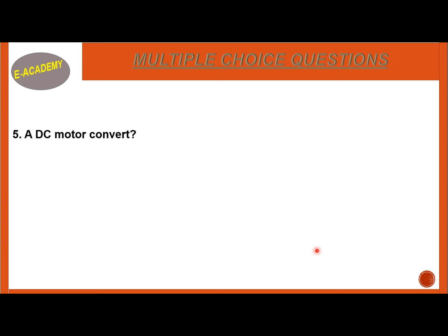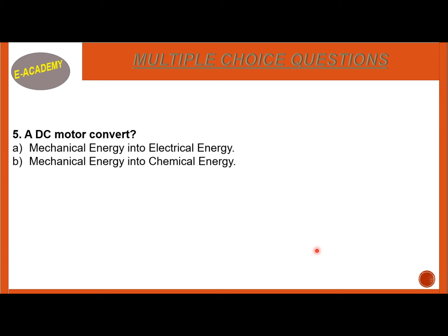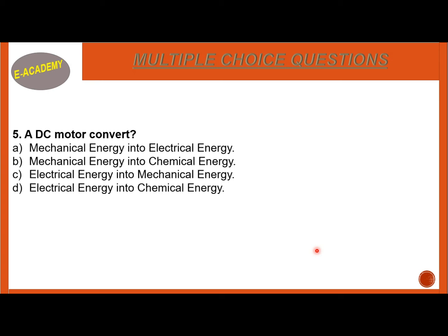Question 5: A DC Motor converts — A. Mechanical Energy into Electrical Energy. B. Mechanical into Chemical Energy. C. Electrical into Mechanical Energy. D. Electrical into Chemical Energy. The correct option is C — Electrical Energy into Mechanical Energy.